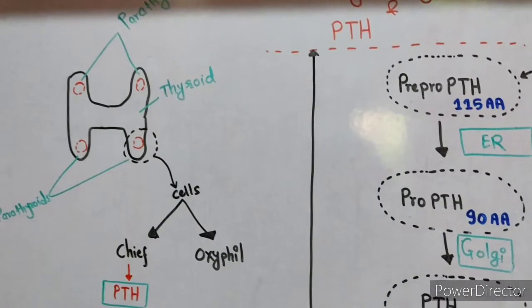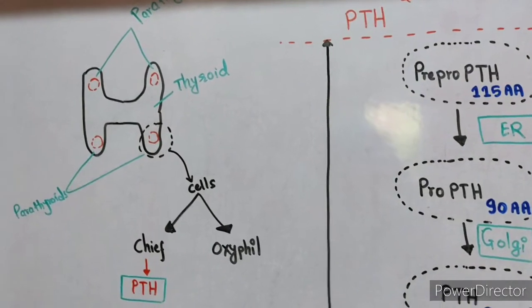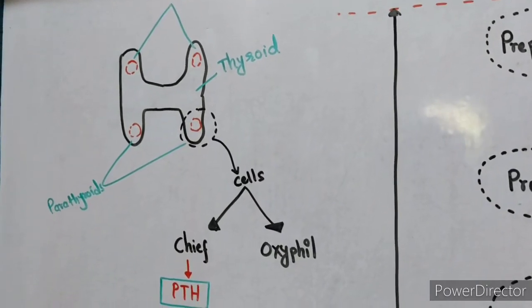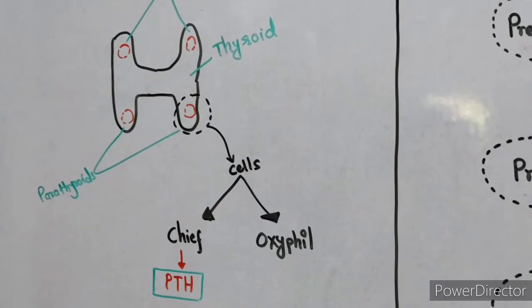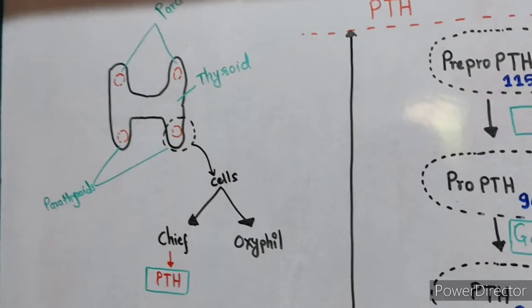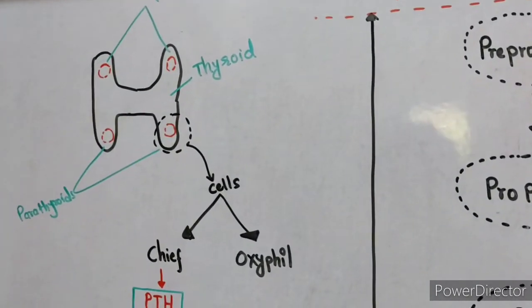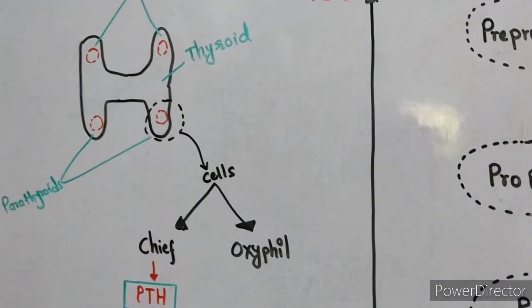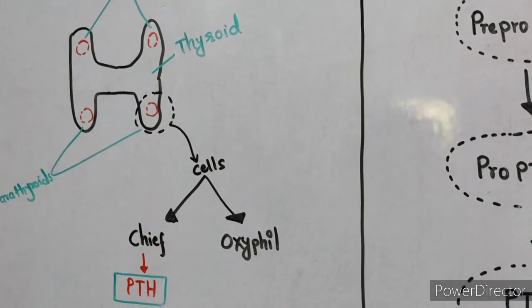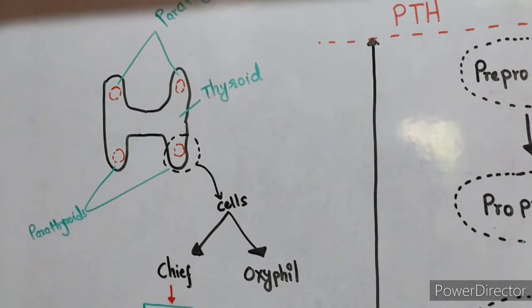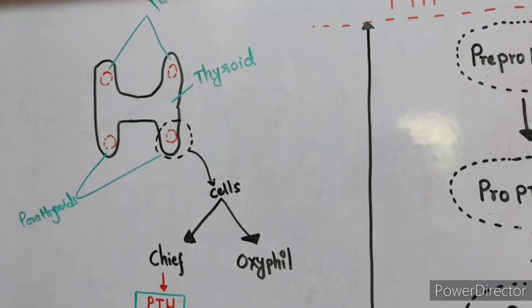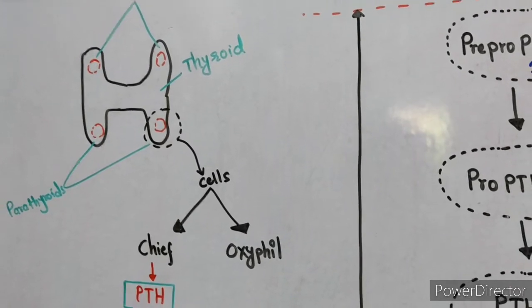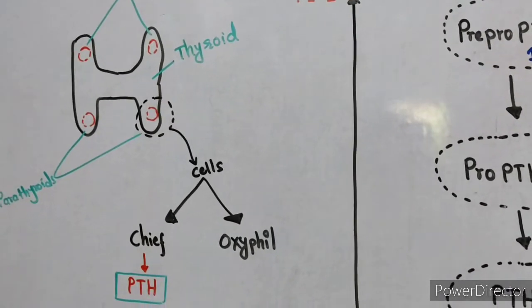There are a total of four parathyroid glands. Two parathyroids are behind the superior poles of the thyroid gland, whereas two parathyroid glands are behind the inferior poles. If two of four parathyroid glands are removed, there are no major physiological abnormalities. If three are removed, there will be transient hypoparathyroidism, but a single remaining parathyroid can undergo significant hypertrophy to perform the functions of all four glands.